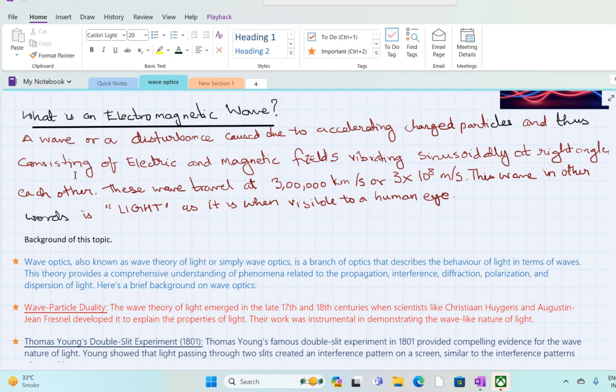So here we have seen about the accelerating charged particles. This is the most important thing to keep in mind, what are accelerating charged particles. So let us understand that in our solar system, the sun is the source of electromagnetic wave.